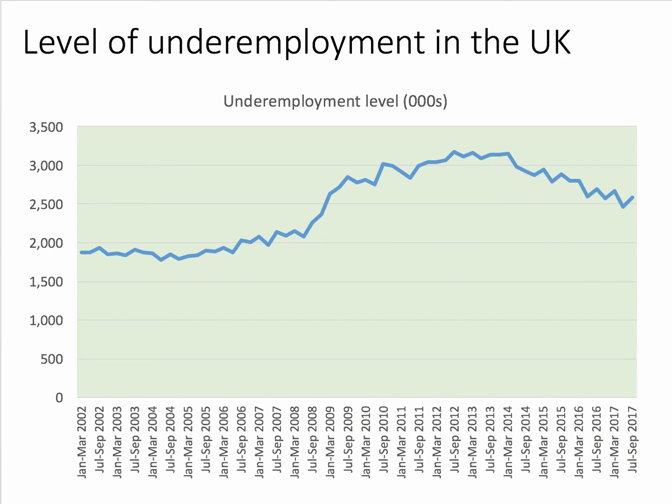The evidence from the government is that the current level of underemployment in the UK is just over 2.5 million people — nearly twice as many underemployed workers as unemployed workers. Underemployment has come down since 2013, but it's significantly higher than it was in 2002, while unemployment, as we saw in the first chart, has declined.